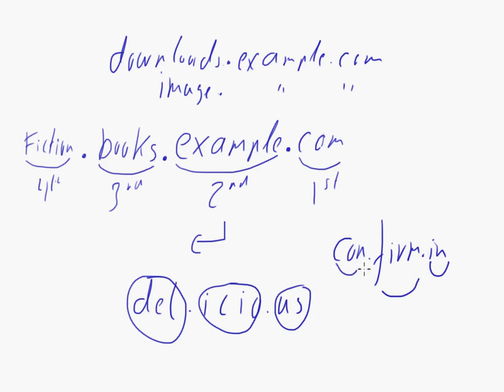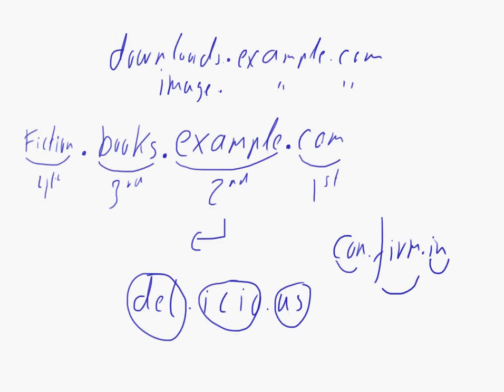Confirm is then the second level domain, and that would be the third level domain. So you can see subdomains have numerous functions that you can use them for.